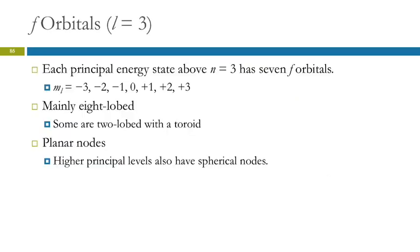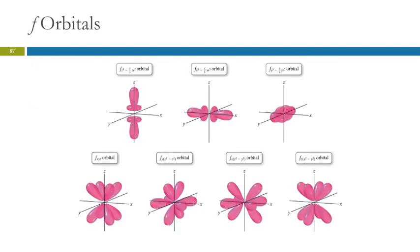Then there are f orbitals as well. So there's seven of those. Those are mostly eight-lobed. Those also have planar nodes. Look at those guys. Again, the math says that's what the shapes are.